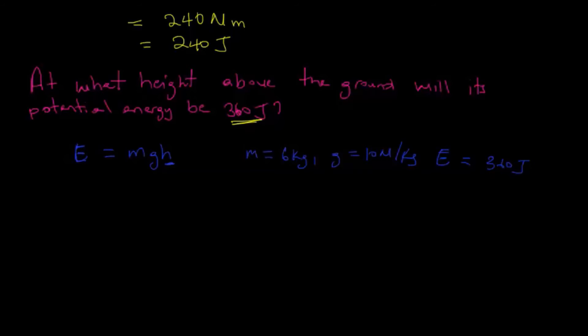So let's plug in the variables here. We have 360 joules equal to 6 kilograms times 10 newtons per kilogram, which gives us 60 newtons, and we have our h here.